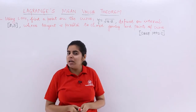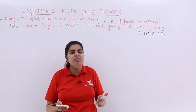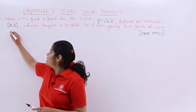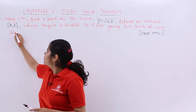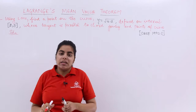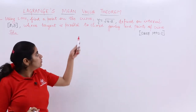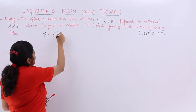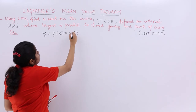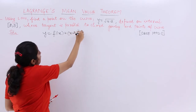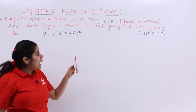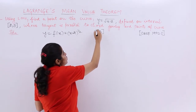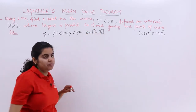So the question doesn't become difficult for us — it is the same as the previous problem. Let's start with the solution. Given y = f(x) = (x − 2)^(1/2), and the interval defined is the closed interval [2, 3].